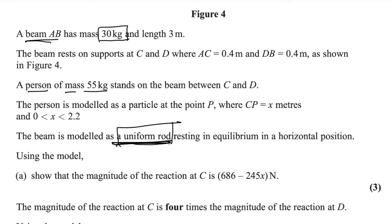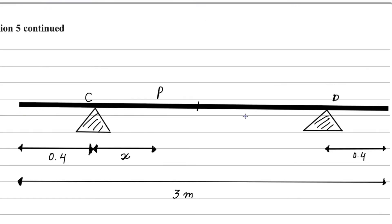Secondly, a person of mass 55 kg is standing on the beam between C and D, modeled as a particle at point P. Because the beam is a uniform rod, the weight of the beam acts at the midpoint. The weight force is drawn at the midpoint, and since mass is 30 kg, weight will be 30g, where g is gravitational acceleration. So this weight force acts downward at the midpoint.